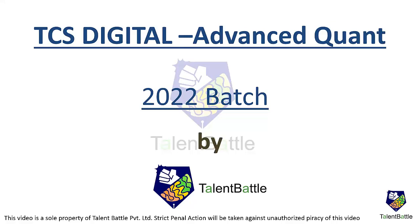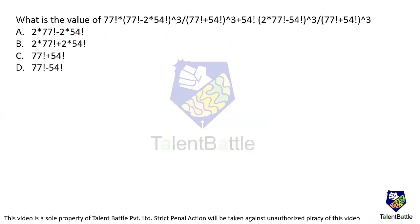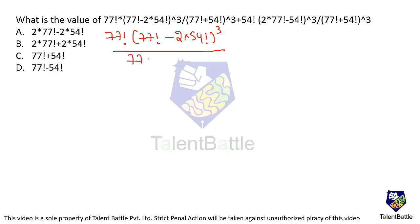So we'll start. What is the value of 77! × (77! − 2×54!³) divided by (77! + 54!³)? We will first write this expression: the numerator is 77! × (77! − 2×54!³), and the denominator is (77! + 54!³)³ + 54! × (2×77!).